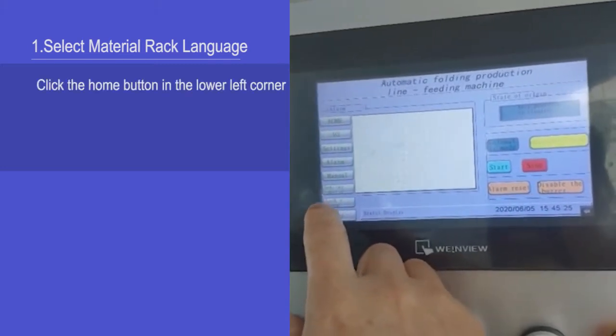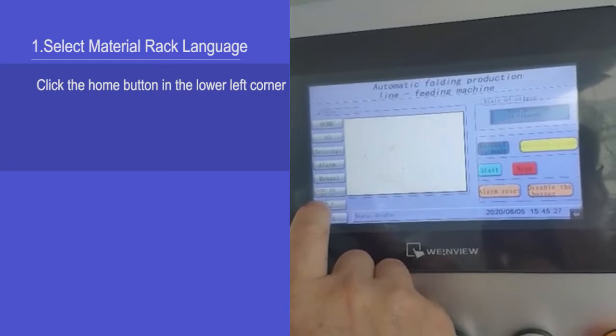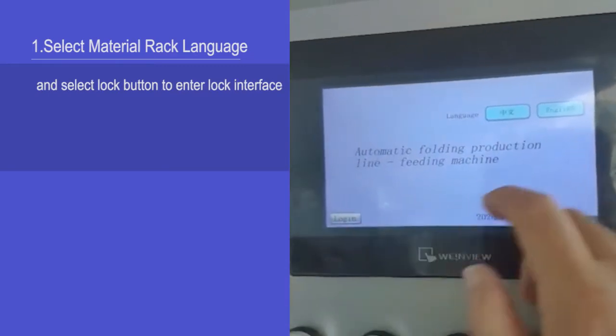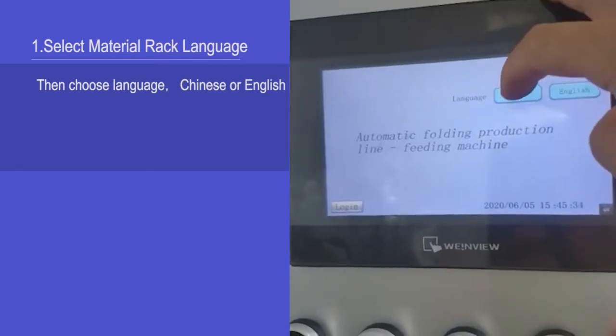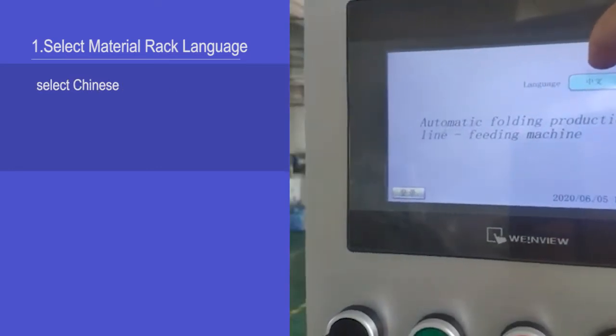Click the home button in the lower left corner and select lock button to interlock interface. Then choose language, Chinese or English, and select Chinese.